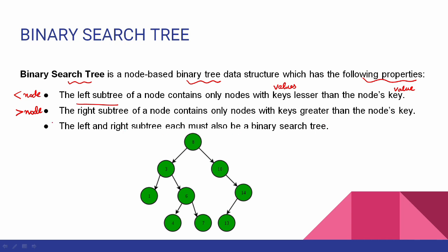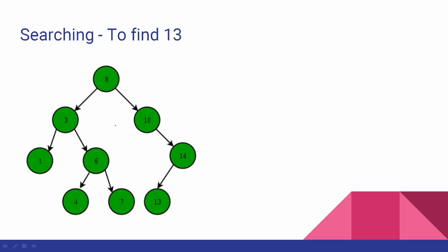This property is applicable to every node in the BST. So how do you verify this property? Let's look at an example binary search tree to understand how to search and how insertion works.